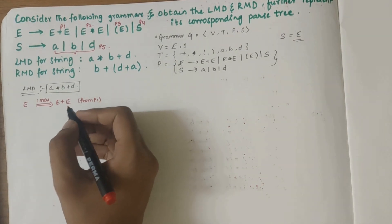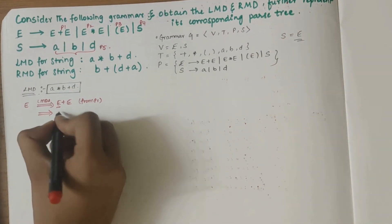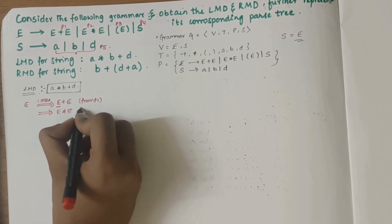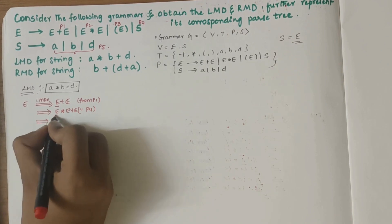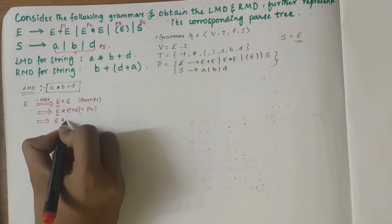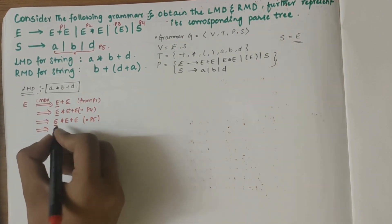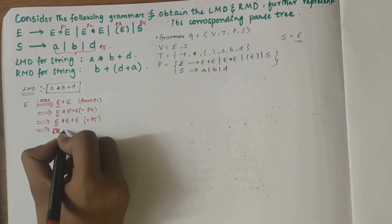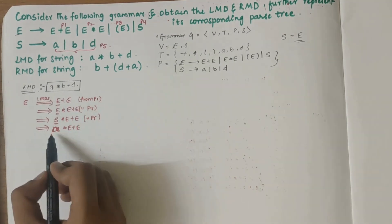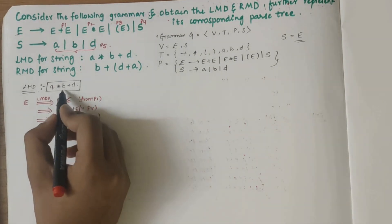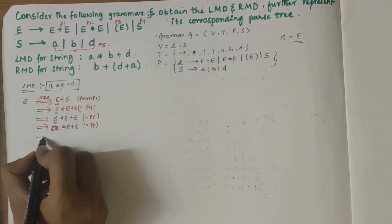Since this is LMD, we need to replace the leftmost variable in each step. We replace the leftmost E to get E star E plus E — this is from P2. Then we replace the leftmost E to get S star E plus E — from P4. Next, replacing S we get A star E plus E — this is from P5. We now have A in the correct position with star.